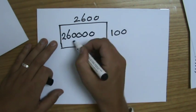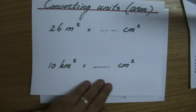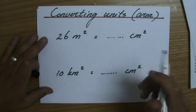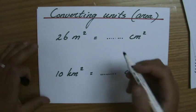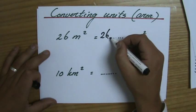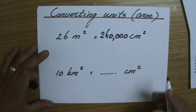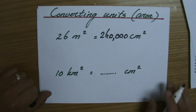So that's going to be 2, 6, 0, 0, 0, 0 which is 260,000. So apparently 26 meters squared, which is quite big, are 260,000 centimeter squared.